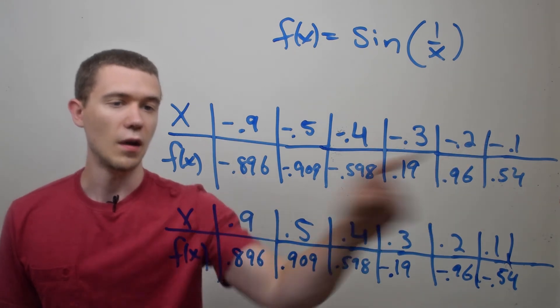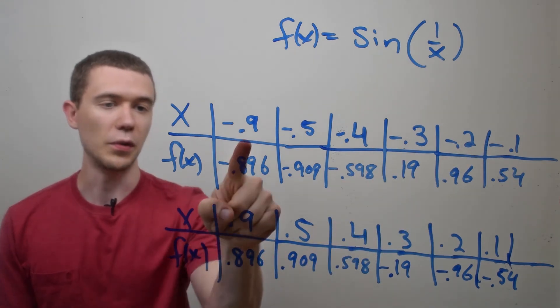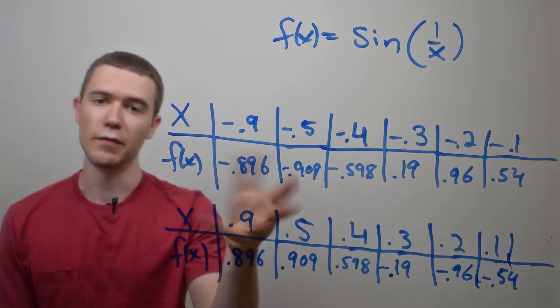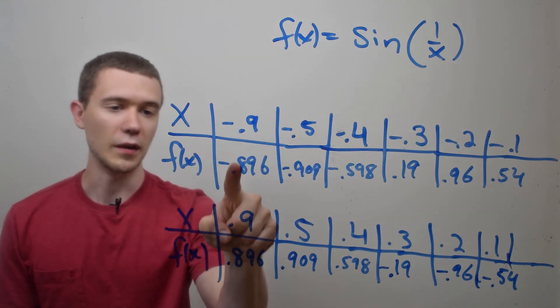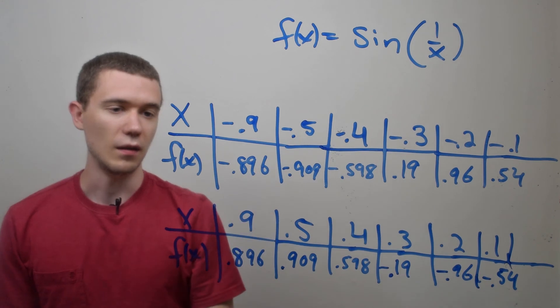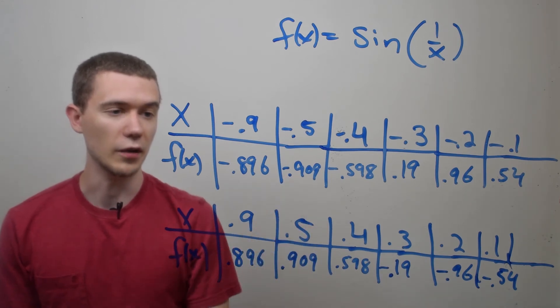If I plug in minus 0.9 and I've rounded these values a little bit, I'm getting minus 0.896. If I plug in minus 0.5 getting closer to 0 from the left side, I'm getting minus 0.909. So in other words the value dropped.